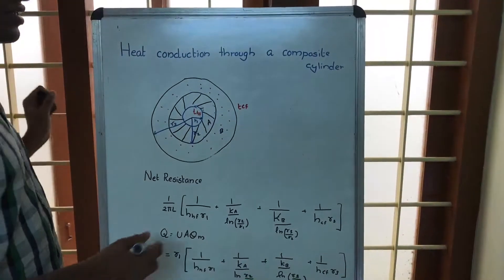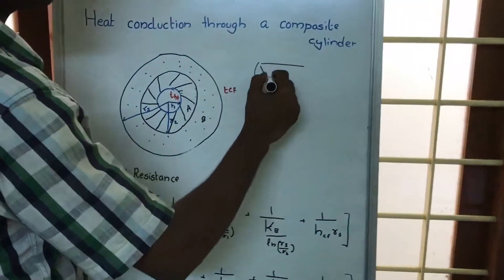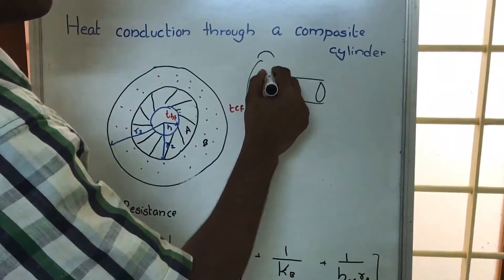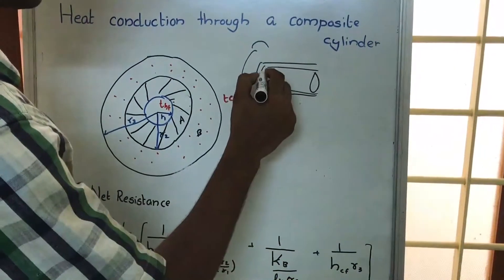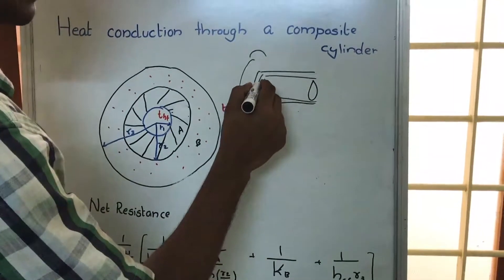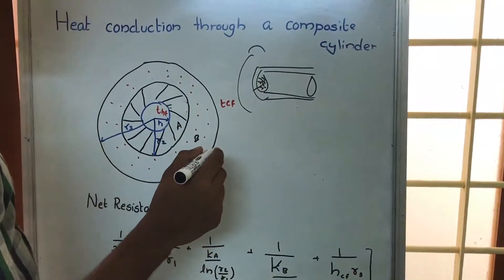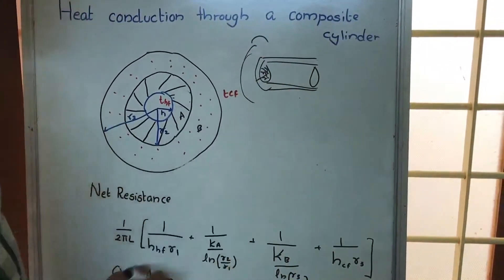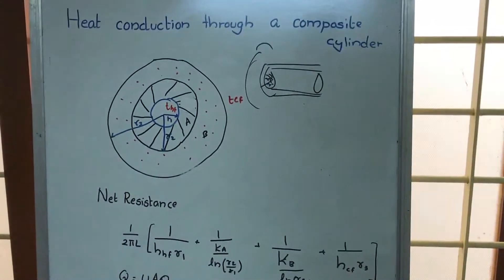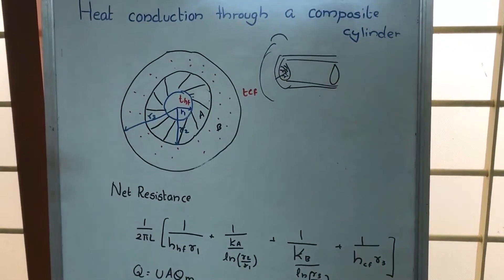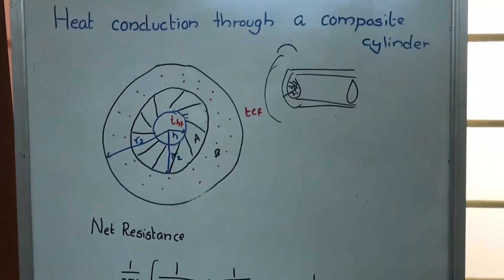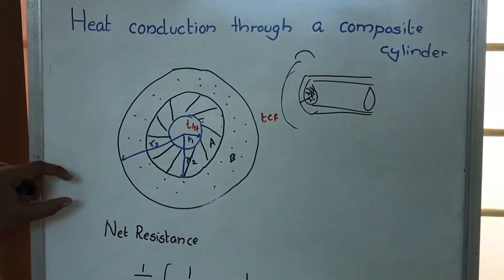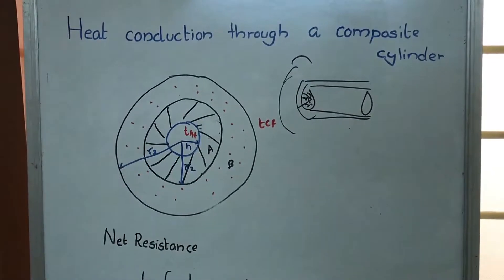Heat conduction through a composite cylinder. When we are considering flow through a heat exchanger, there will be an inner tube with inner radius R1 and outer radius R2, and then another tube. In order to study heat transfer through this tube, we should be aware of heat conduction through composite cylinder.